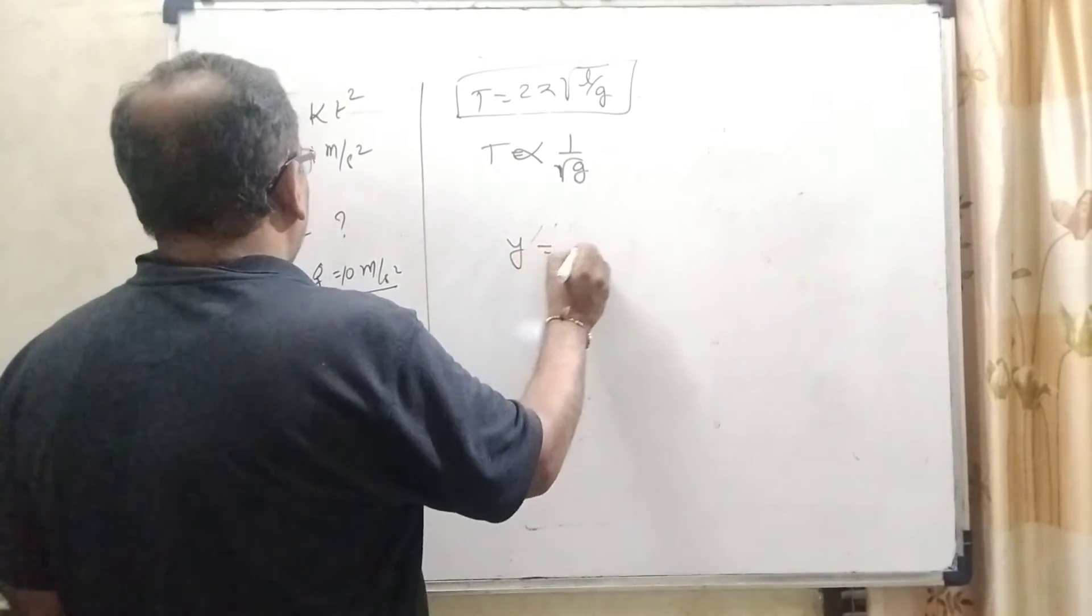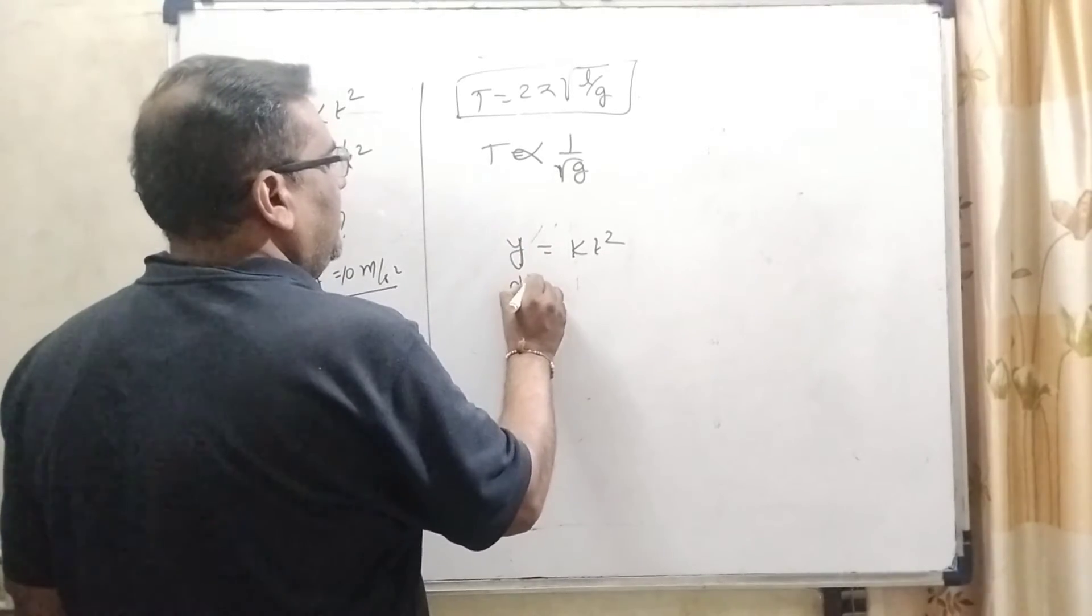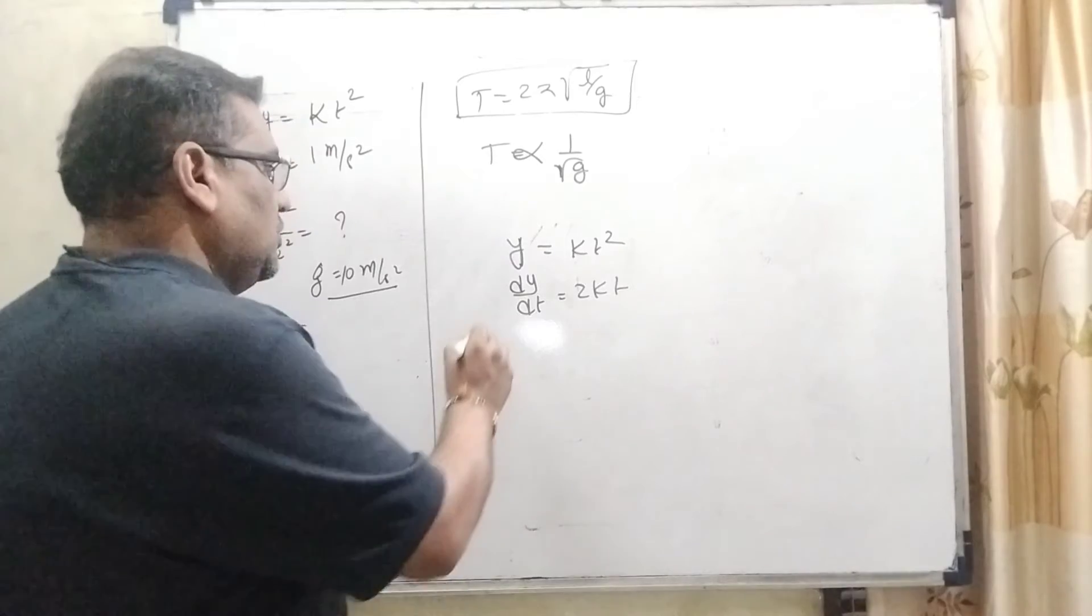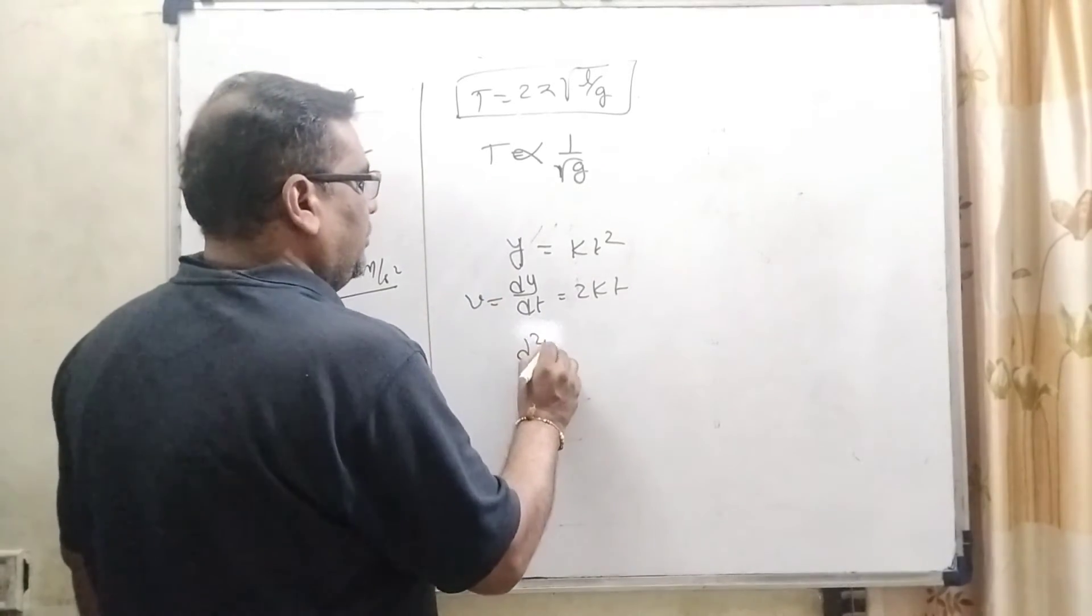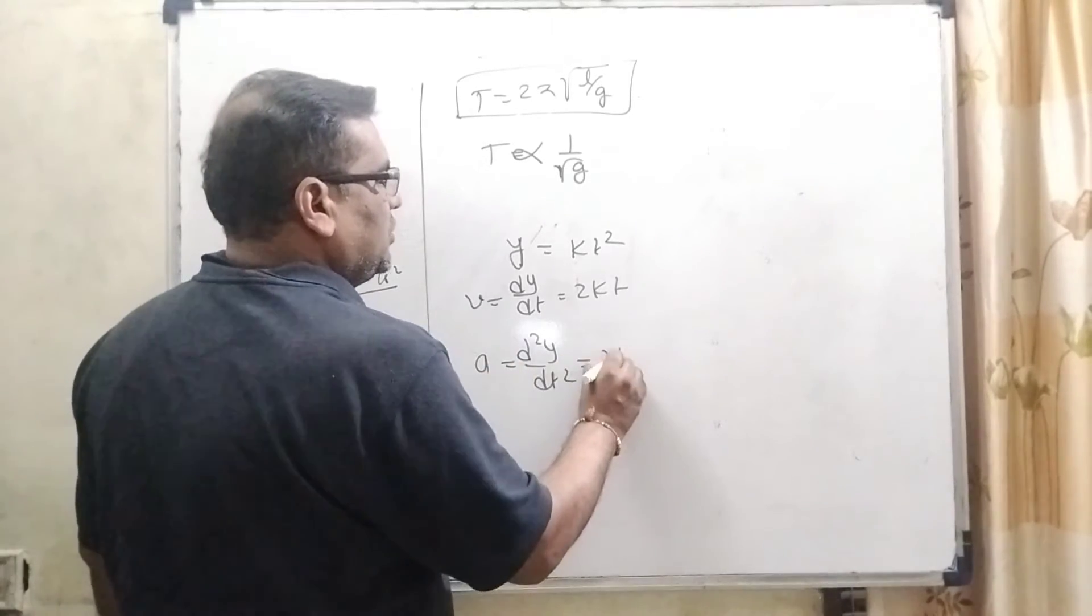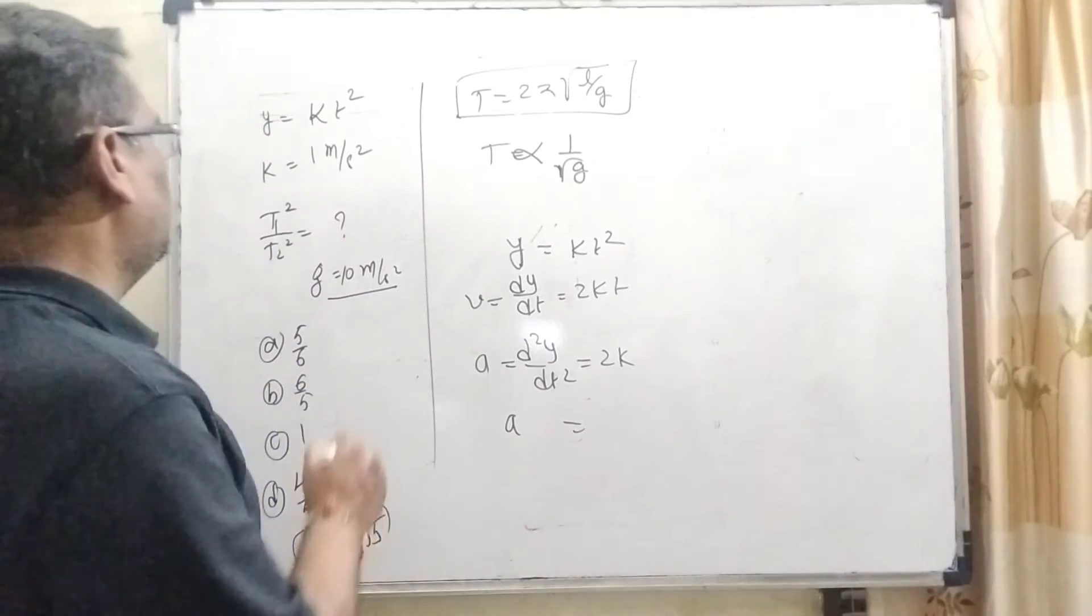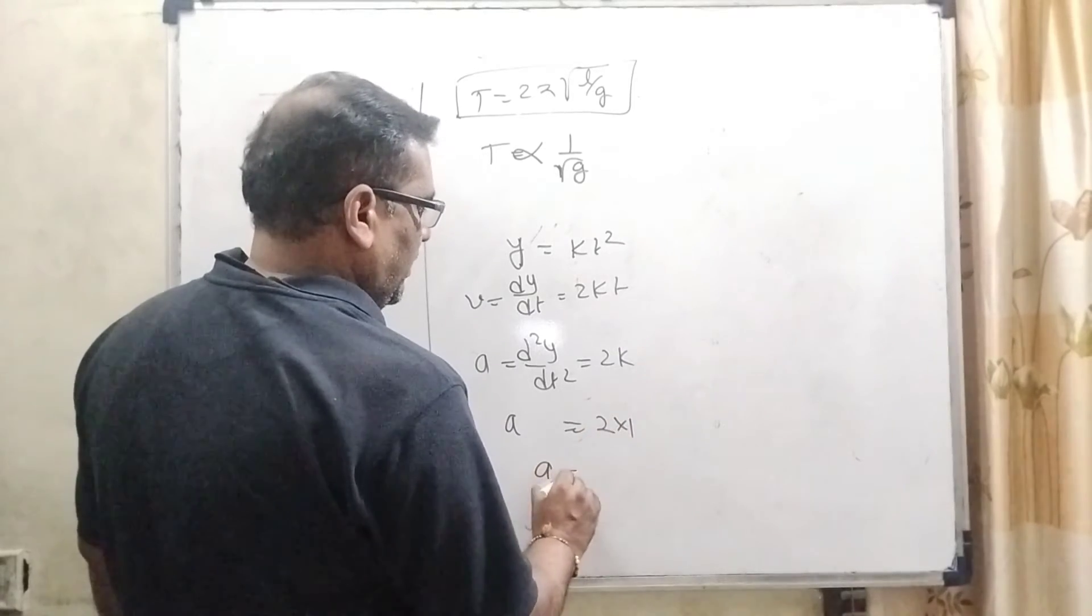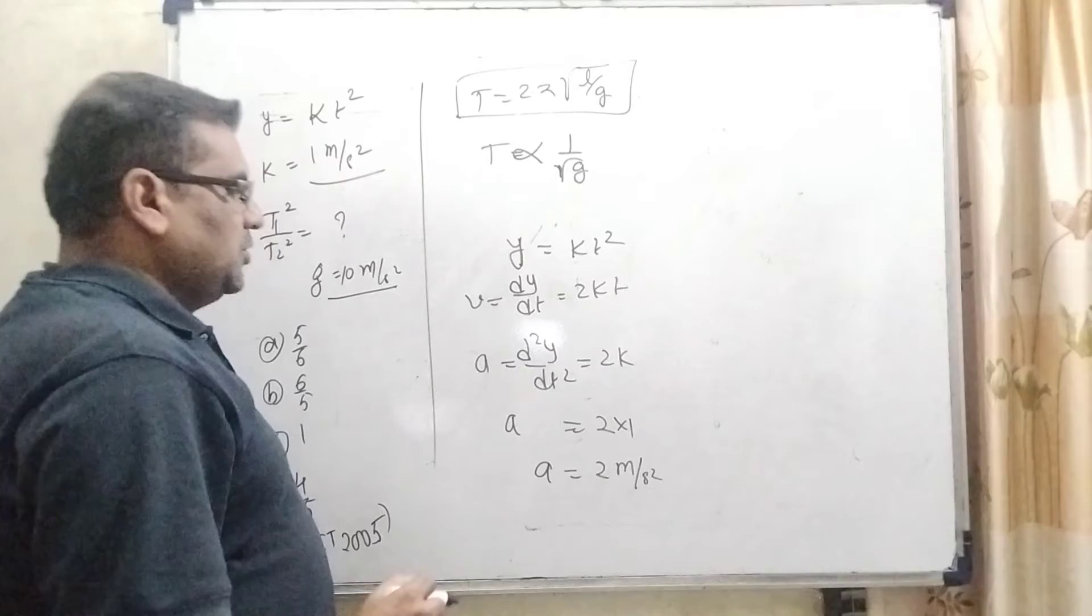So, let us see y equal to kT square, differentiate with respect to T both the sides, dy by dt equal to 2kT. So, here we get the velocity and again differentiate d2y dt square, we get acceleration, it is 2k. And what is the k? k is given in the question 1 meter per second square. So, substitute this value 1. So, here we get 2 meter per second square.